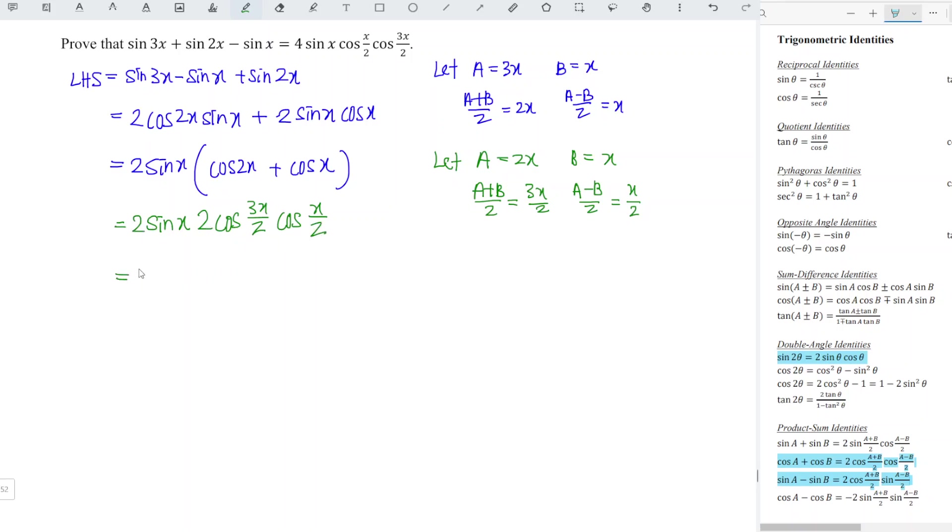We should rewrite and simplify. 2 times 2 is 4 sin x, followed by the smaller angle first, so we have cos x over 2 and followed by the bigger angle 3x over 2. Hence we can realize that this is actually the right hand side and done.